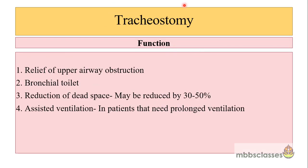Let us now see the functions of tracheostomy. When tracheostomy is done, it helps to relieve upper airway obstruction, which is the most common indication for performing tracheostomy. It assists in bronchial toileting — that means clearing secretions from the lower airway. It also helps in reduction of dead space in the upper airway, which may be reduced by 30 to 50 percent. Lastly, in cases where patients need prolonged ventilation, it helps in assisting ventilation.